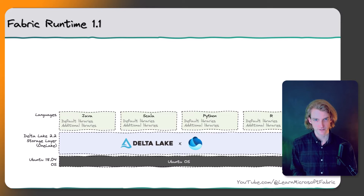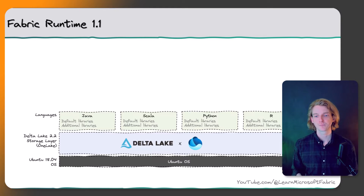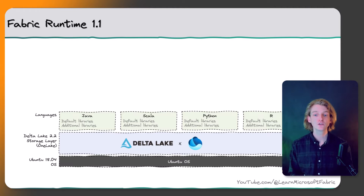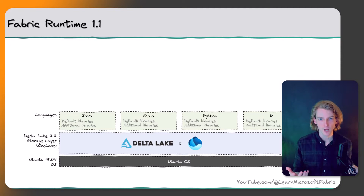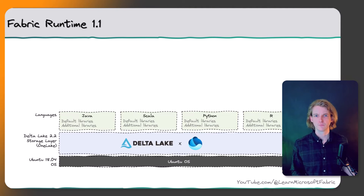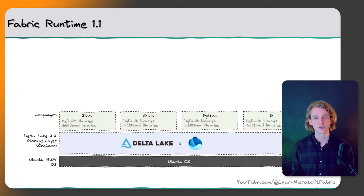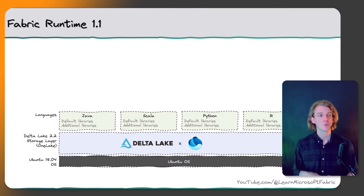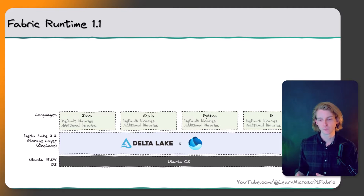There are four languages installed: Java, Scala, Python, and R. Spark itself is written on top of the JVM (Java Virtual Machine), and Python and R are higher-level languages that get compiled down to the JVM. Each language comes with a set of default libraries — for Python that's the Anaconda distribution. On top of the defaults, you can also add your own libraries via PyPI, conda, or custom wheel files, and I'll cover that in a future video.